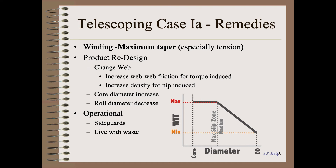A variation of tension taper is the easiest option, provided that your winder controls and your process engineers have the smarts. However, that may not be enough in more severe cases, in which case we must redesign the web, the roll, or the winder.